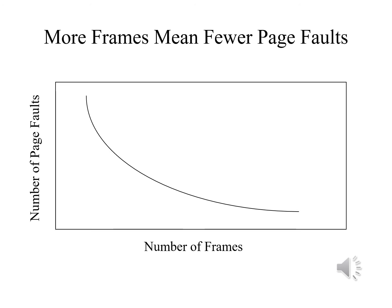There is a corollary to this: if we use more frames, there should be fewer page faults, though it will become clear soon that there is an exception to that rule. In general, we want to ensure that processes using a larger number of different pages get a larger number of frames, which will minimize their page faults.